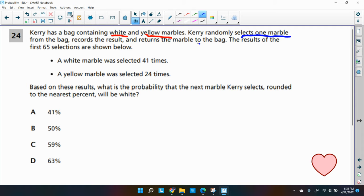So she's returning it to the bag. The results of the first 65 selections are shown below. So out of the 65 times she picked the marble and put it back, this is what happened. The white marble was selected 41 times. All right. The yellow marble was selected 24 times. And if we add up 41 plus 24, that should be a total of 65.